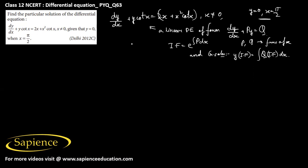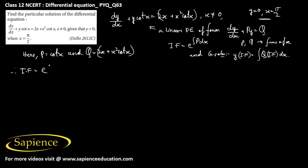Here the function P is cot(x) and the function Q is 2x + x²·cot(x). Therefore the integrating factor equals e raised to the integral of cot(x) dx. Since the integral of cot(x) is log|sin(x)|, this becomes e raised to log|sin(x)|, which is simply sin(x). So sin(x) is the integrating factor.